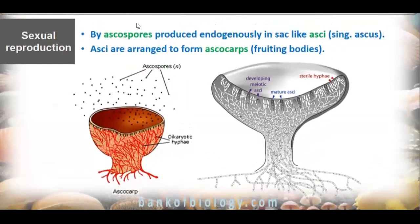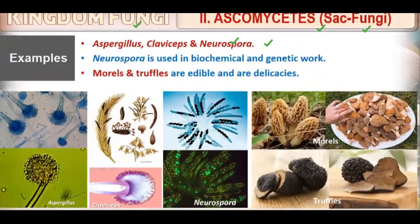In Ascomycetes, sexual reproduction occurs endogenously, producing ascospores present in structures called asci. Asci are arranged to form fruiting bodies called ascocarps. Examples of Ascomycetes include Aspergillus, Claviceps, and Neurospora, which are used extensively in biochemical and genetic research.